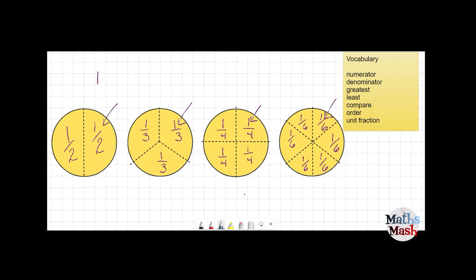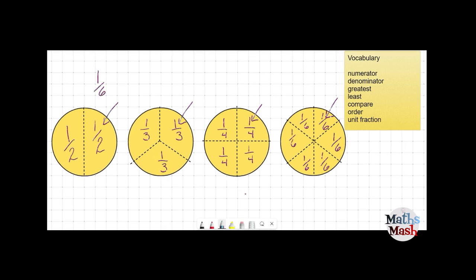Alright so if we order these fractions from smallest to biggest or from least to greatest we would have one-sixth and then we would have one-quarter and then we would have one-third and then we would have one-half.